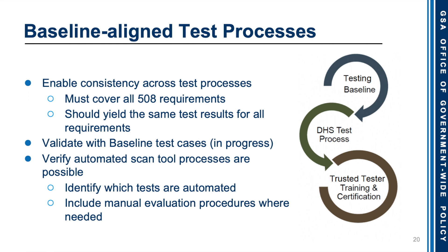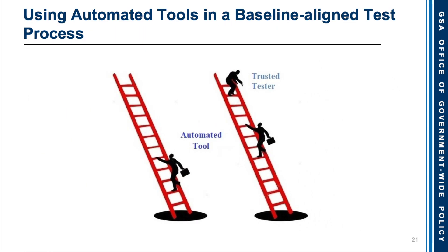This highlights the current state of automated tools, where there is a limit of about 30% of the baseline tests that can be performed automatically, and the 70% would need to be accounted for in a manual evaluation process. The graphic on screen shows a person climbing a ladder holding a briefcase, about 30% of the way up, representing automated tools and the limits to which they can evaluate. Next to it is another ladder with a person climbing, and above them is a Trusted Tester reaching down to help them complete the process — an example of combining automated and manual inspection when evaluating against the baseline.